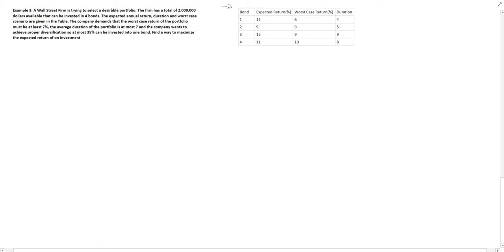A Wall Street Firm is trying to select a desirable portfolio. The firm has a total of $2 million available that can be invested into four bonds. The expected annual return, duration, and worst case scenario are given in the table. The company demands that the worst case return of the portfolio must be at least 7%. The average duration of the portfolio is at most 7% and the company wants to achieve proper diversification so at most 35% can be invested into one bond. Find a way to maximize the expected return on investment.